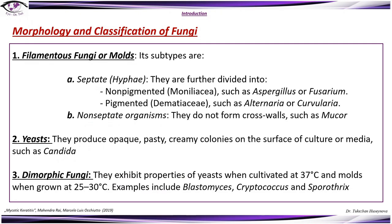There are a few types of fungi. Filamentous fungi or molds — the subtypes include septate hypha, which can be pigmented or non-pigmented, and non-septate organisms that do not form cross walls, such as Mucor. There are also yeasts, which produce opaque, pasty, creamy colonies on the surface of culture media, such as Candida.